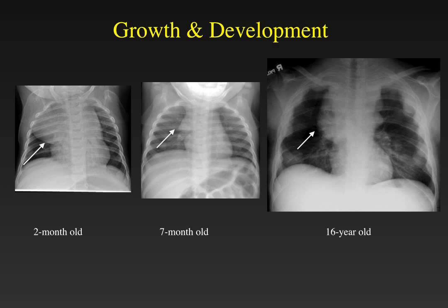For example, a two-month-old that presents with a large mediastinal mass that you can see through is a normal thymus. This is a classic example of what a normal thymus looks like in a two-year-old. In a seven-month-old, the thymus has become much smaller in proportion to the rest of the mediastinum in the chest. And by 16 years of age, it's very difficult to see a normal thymus.